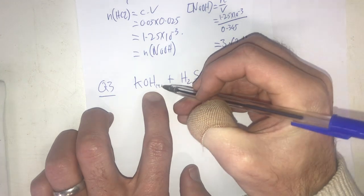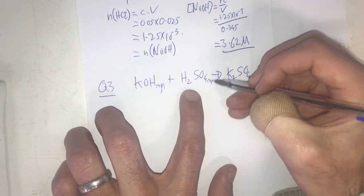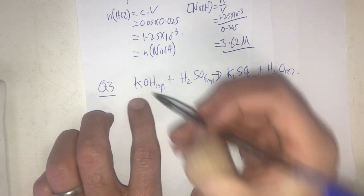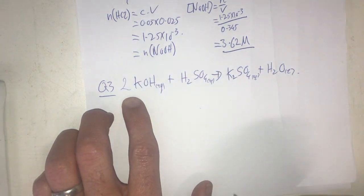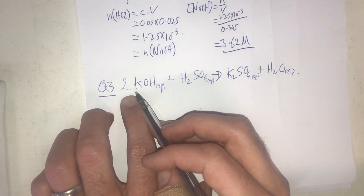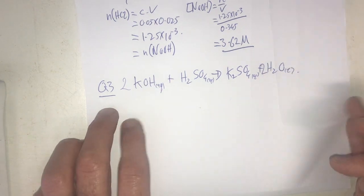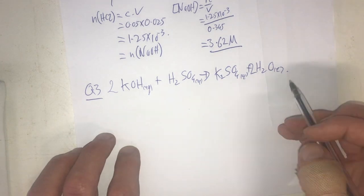Now this needs to be balanced and put states in there. I'll put the states in first because they're really easy, and then I'm going to balance it up. I need 2 in front of my potassium hydroxide, that's going to give me 2 hydrogens, another 4, so that's going to be 2 there. So that's my balanced equation.